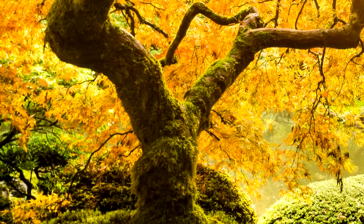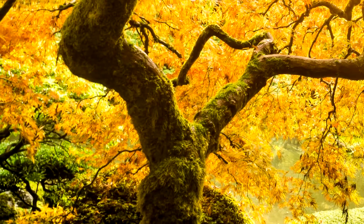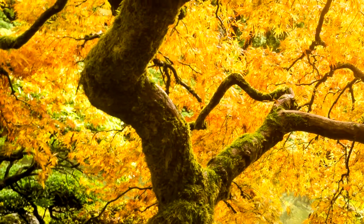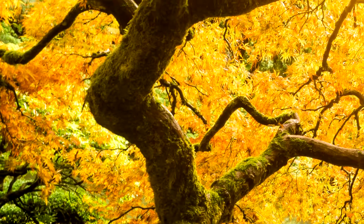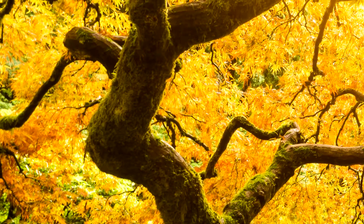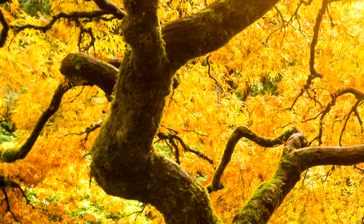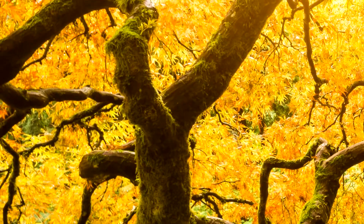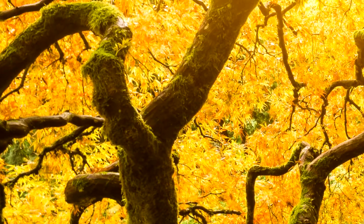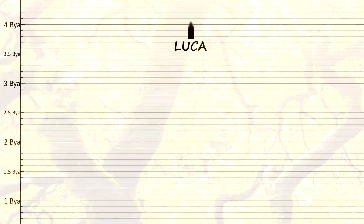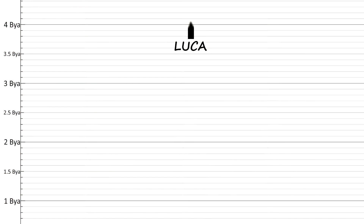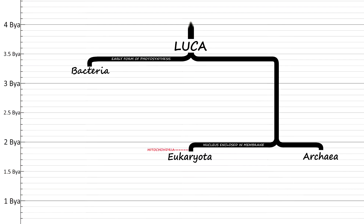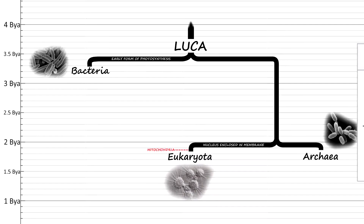Hello everyone and welcome back to Kobean history. Today is the second episode of my Tree of Life series. In the last episode we had a look at the last universal common ancestor of all life on earth, and today we are going to see how it evolved into the three domains of life that we know today, which are bacteria, archaea and eukaryotes.